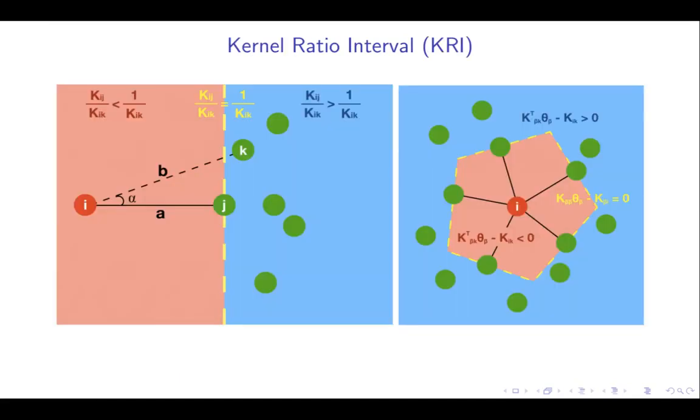This property of NNK can be theoretically and geometrically explained using the kernel-ratio interval, which states the necessary and sufficient condition for two nodes to be connected. Simply put, given a node J connected to node I, NNK looks for additional neighbors that are from a different direction, in other words, orthogonal. For example, in the figure on the left, node K and everything beyond the plane formed by node J will not be connected to node I. Applying this hyperplane argument inductively gives us a convex polytope around each node.